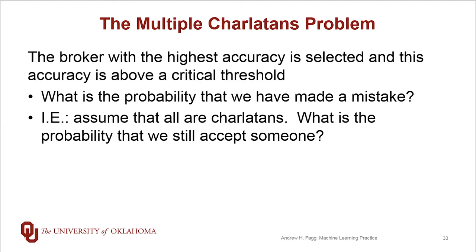And so first off, we need to answer the question of what is our null hypothesis? And that null hypothesis is that all of the stockbrokers are charlatans. And the question we need to answer is, what's the probability that we're still going to accept one of these charlatans as our stockbroker?